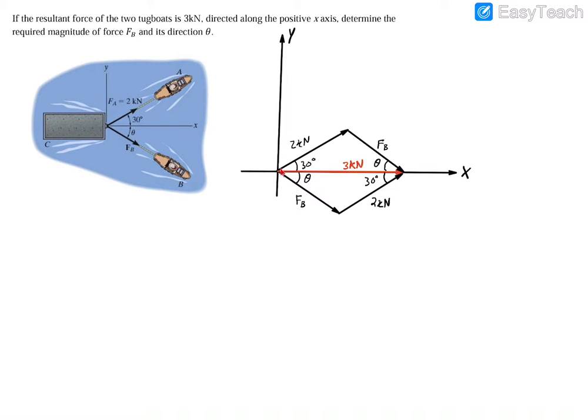And now if you take a look, you actually have a couple of triangles, so you have this triangle up here, this three kilonewton force FB and two kilonewtons, and then down here you also have that three kilonewton force, which serves as the hypotenuse once again, and then you have a two kilonewton and FB.